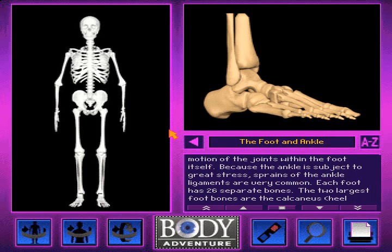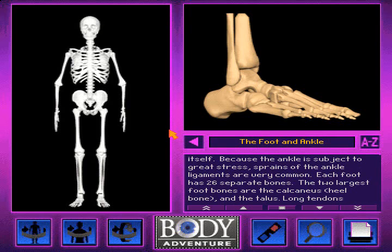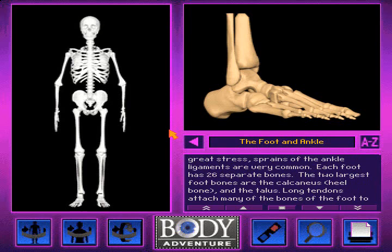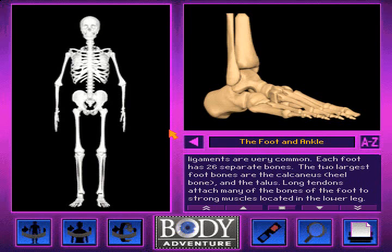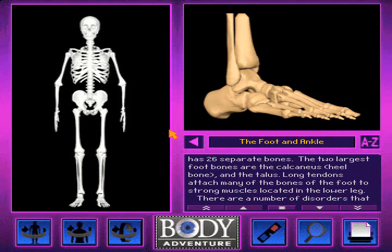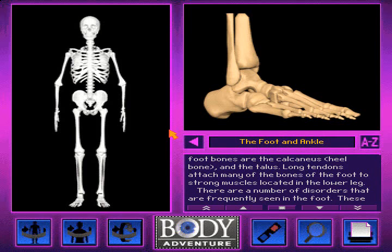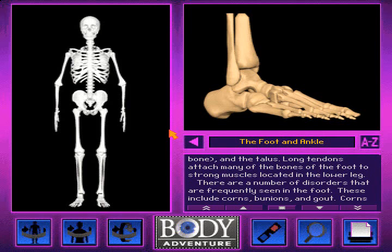Each foot has 26 separate bones. The two largest foot bones are the calcaneus, or heel bone, and the talus. Long tendons attach many of the bones of the foot to strong muscles located in the lower leg.